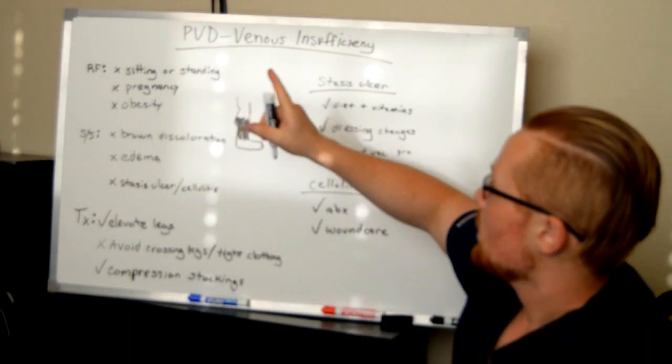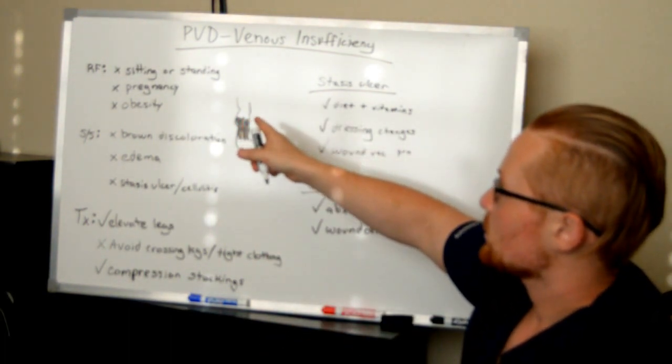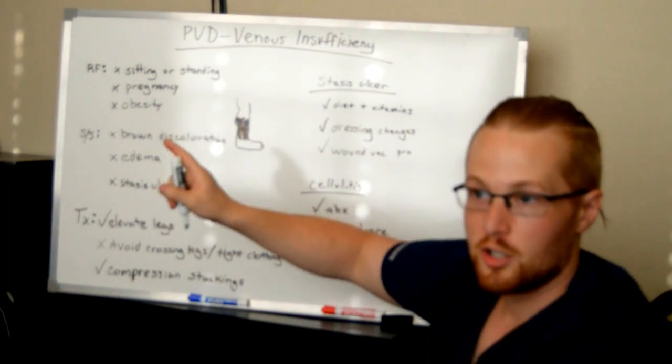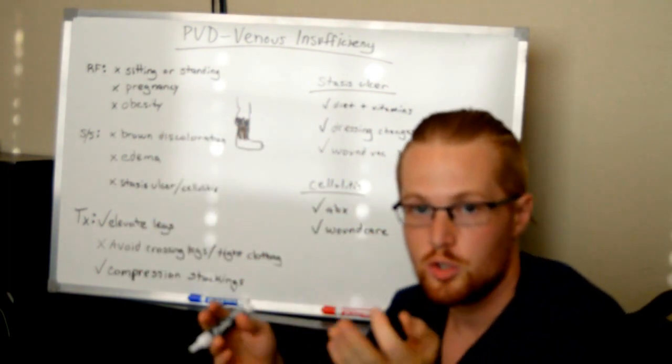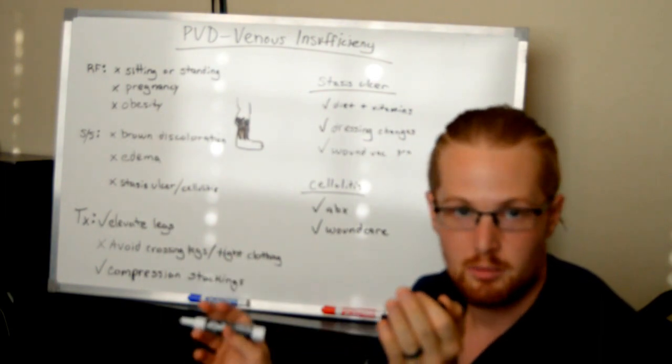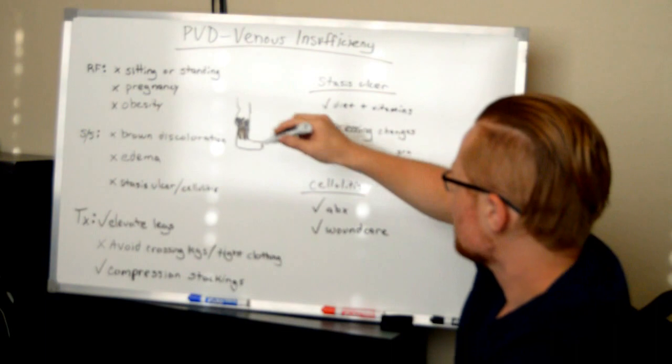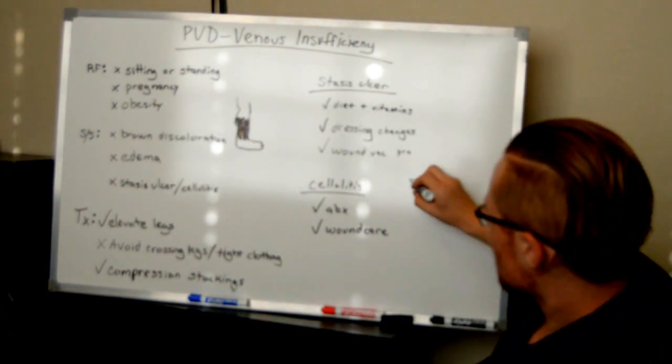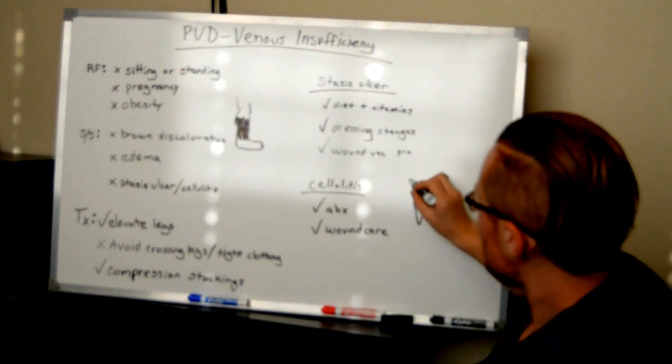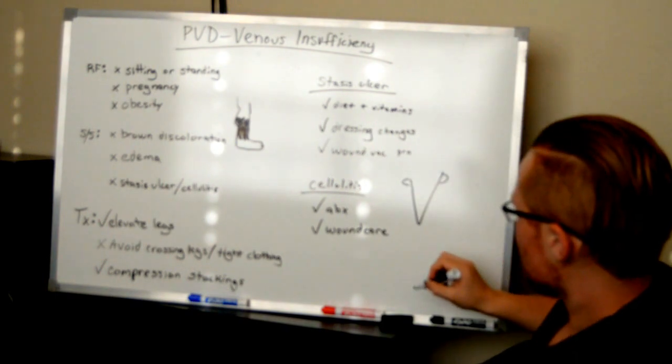Now quick tip, how do you know peripheral vascular disease versus arterial vascular disease, how do you know whether to put the legs up or down? Well it's easy. This is peripheral vascular disease, it's a venous problem. So what do you do with the legs? Look at the V. You put the legs or the feet up.